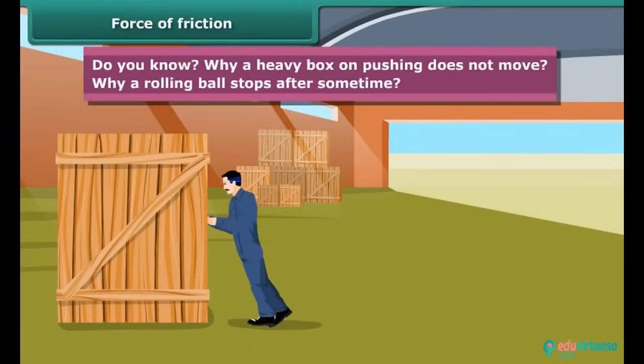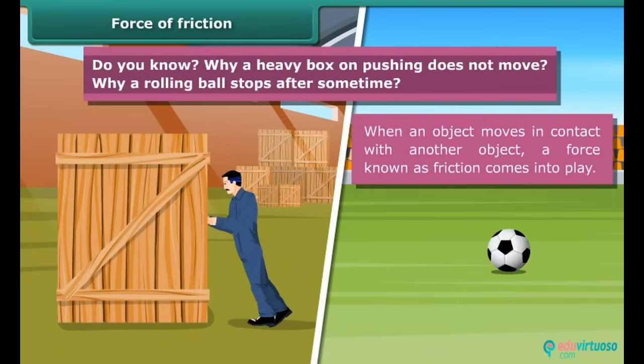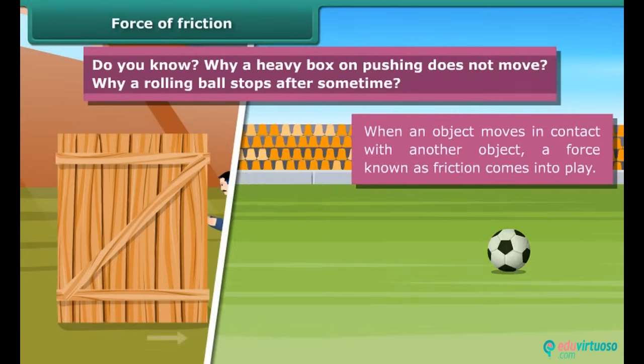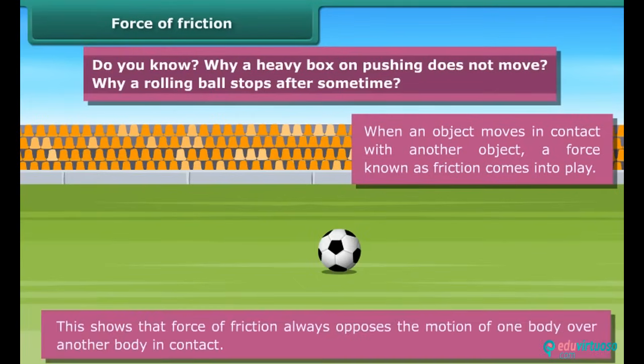Do you know why a heavy box on pushing does not move? Why a rolling ball stops after some time? When an object moves in contact with another object, a force known as friction comes into play. Note that the force of friction always acts on all objects and its direction is always opposite to the direction of motion. The moving object in the animation gradually slows down and ultimately stops due to the force of friction. This shows that force of friction always opposes the motion of one body over another body in contact.